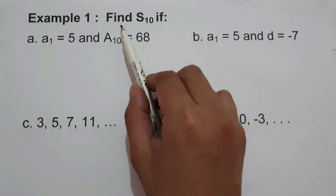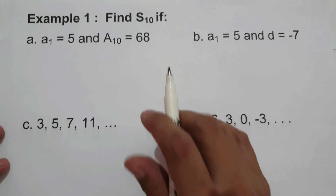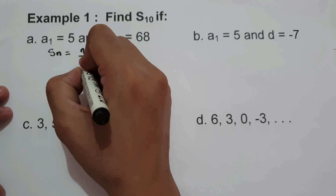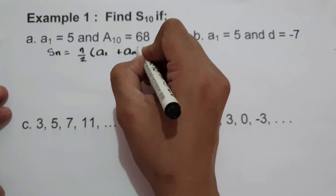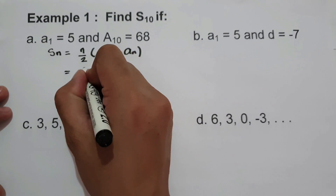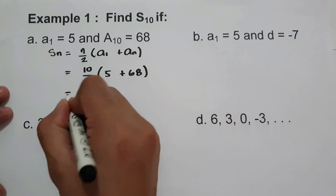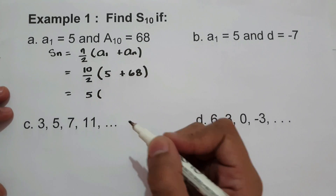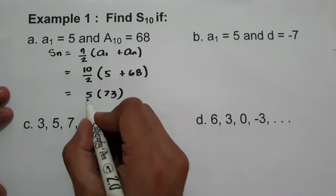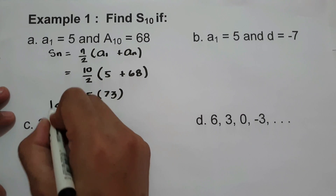On example number 1, we are going to find the sum of the first 10 terms. Letter A: our given is A sub 1 which is 5, and A sub 10 is 68. We'll use the formula S sub n equals n over 2 times A sub 1 plus A sub n. So that is 10 over 2 times 5 plus 68. 10 divided by 2 is 5, times 73 equals 365. So the sum of the first 10 terms is 365.